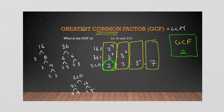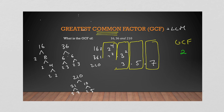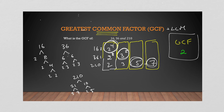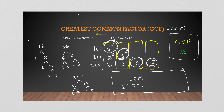Now the lowest common multiple using the same column approach is the opposite: instead of taking the lowest occurrence, we take the highest. We need 2⁴ (from 16), 3² (from 36), 5 (from 210), and 7 (from 210). So the LCM is 2⁴ × 3² × 5 × 7. Whereas the GCF must be common to all of them, the LCM just needs to include the highest power of each prime factor present.